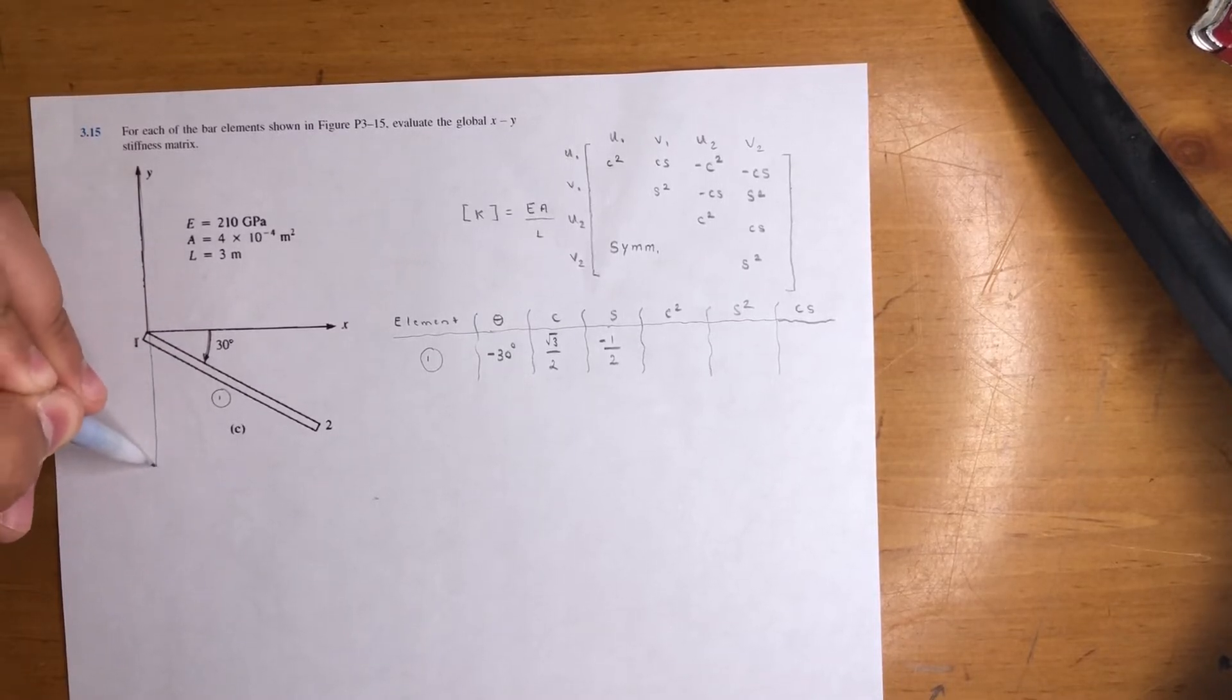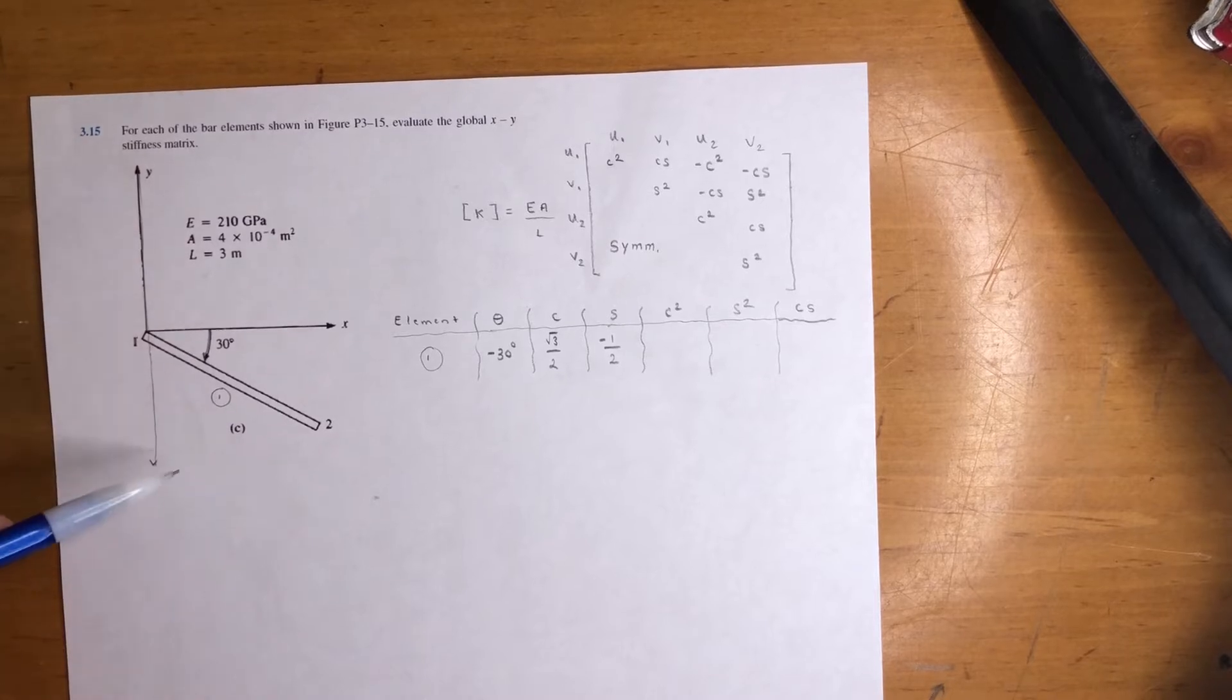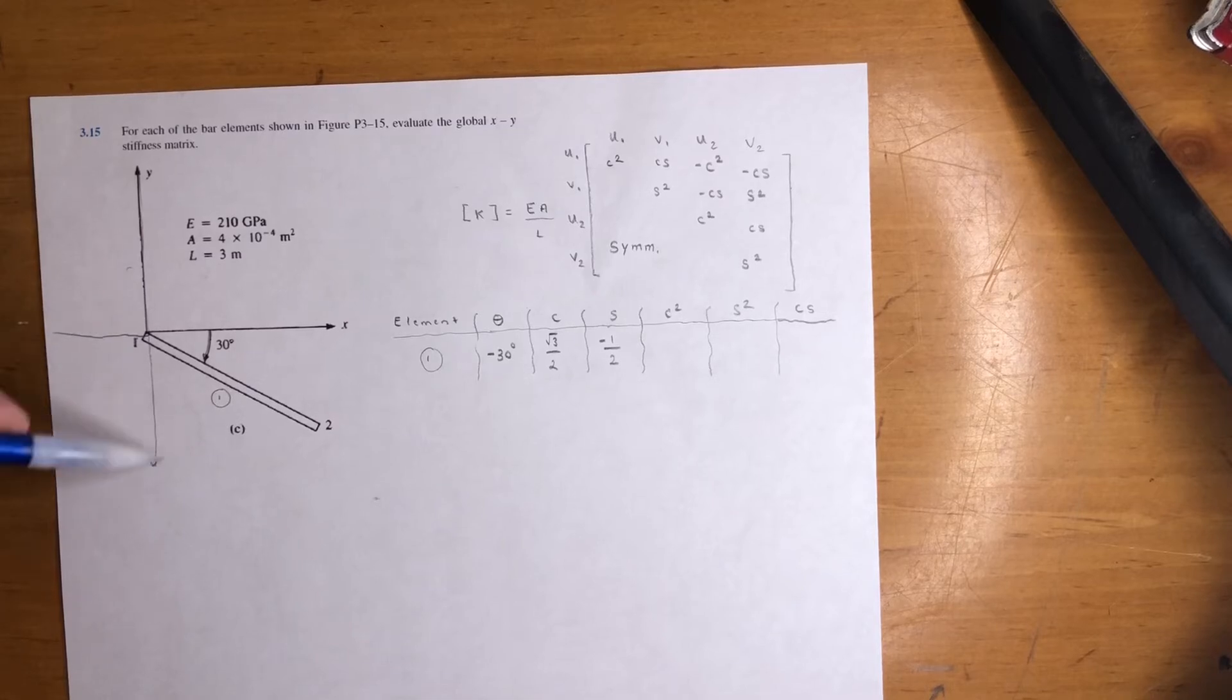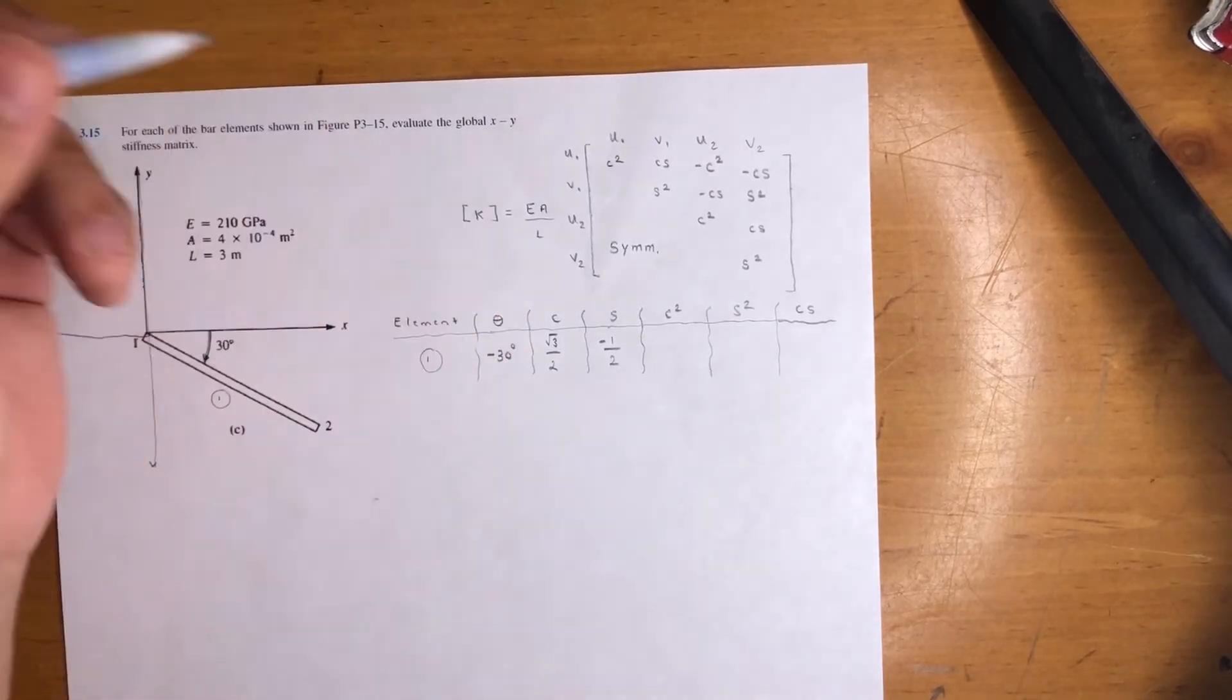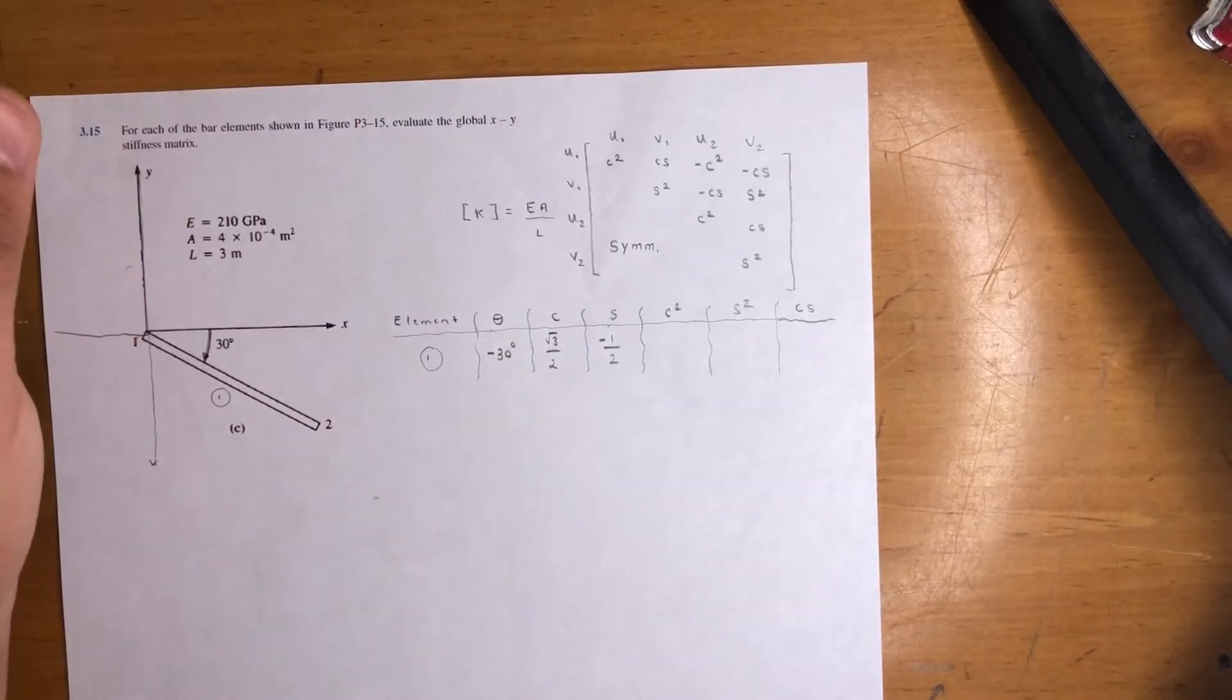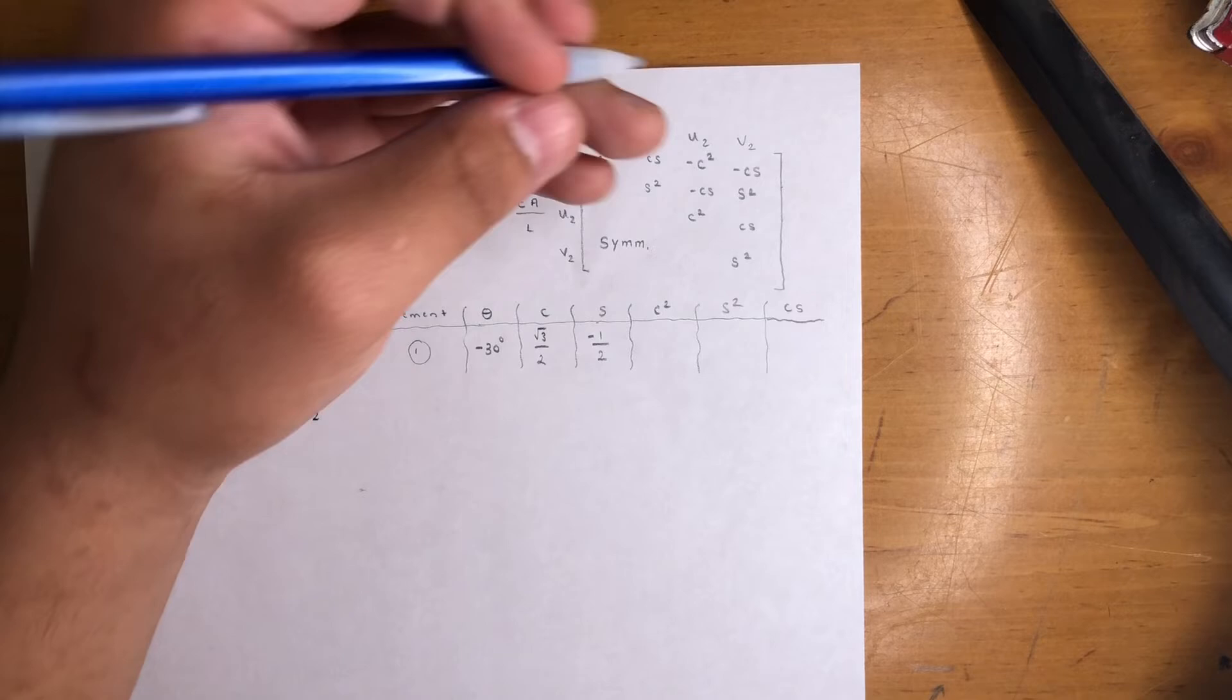Anything in this region is positive X, and then anything below the X is negative Y. So as long as you know your 30, 60, 45 degrees for sine and cosine, you'll be alright. But you could always just use a calculator.